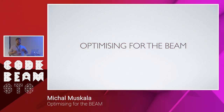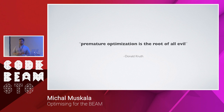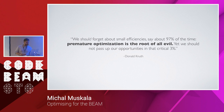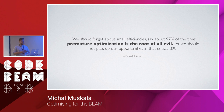My talk today is about optimizing for the BEAM, and how we can make our programs run more efficiently on the virtual machine. I want to start with the famous quote from Donald Knuth that premature optimization is the root of all evil. But we need to consider this quote in its entirety: we should forget about small efficiencies about 97% of the time, yet we should not pass up our opportunities in that critical 3%. This talk is about finding where those 3% are, and then making them efficient.